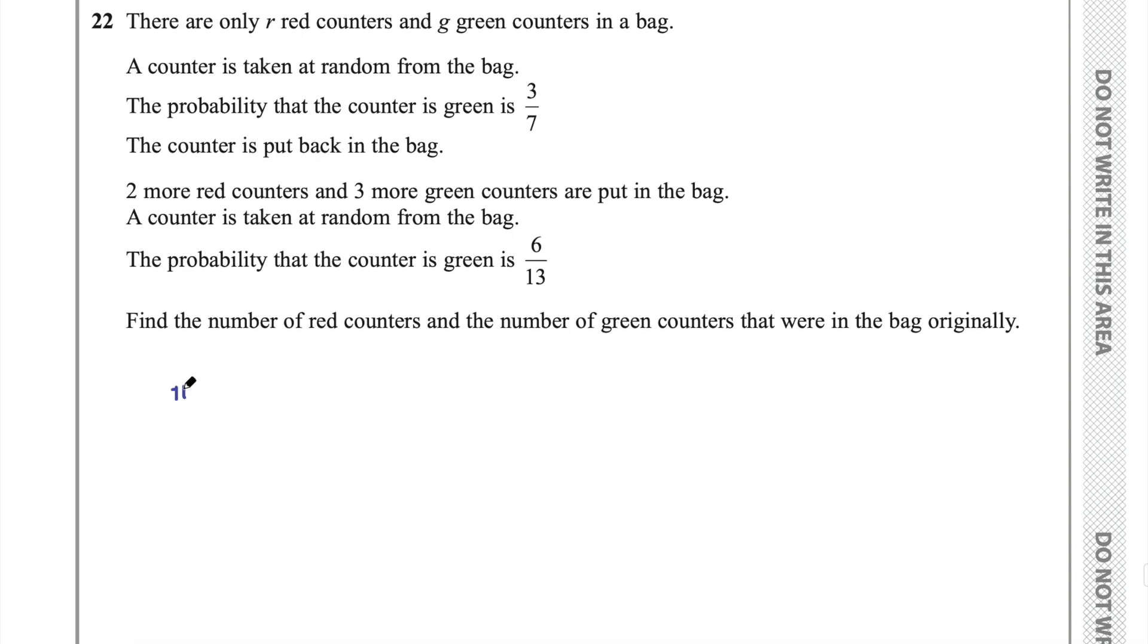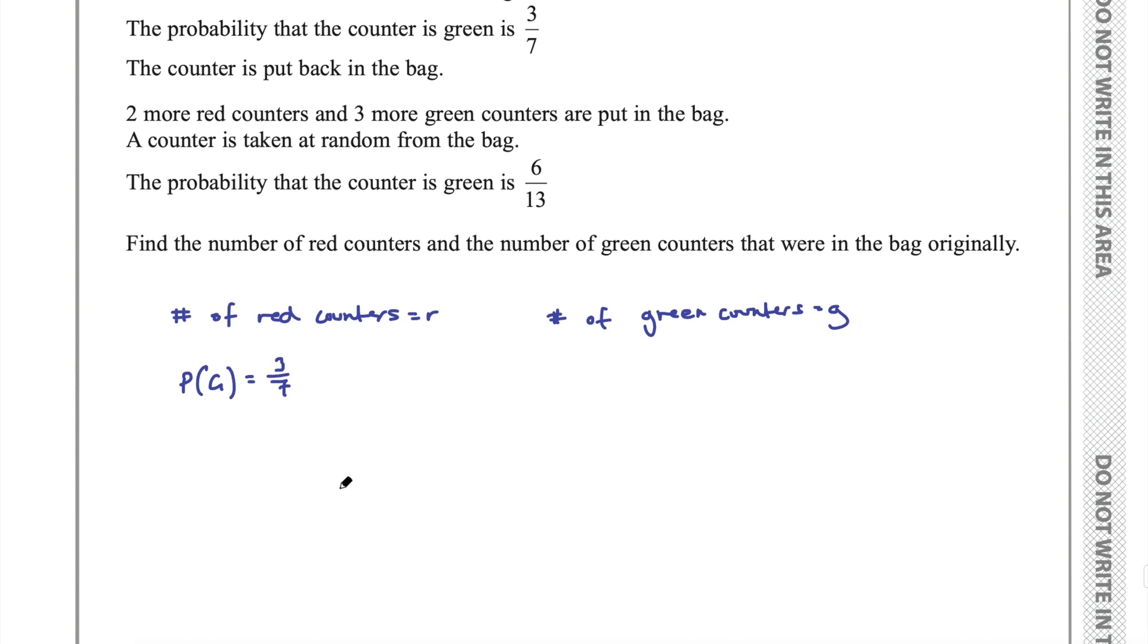The number of red counters originally in the bag equals R and the number of green counters originally in the bag is G. They tell us the probability of picking a green counter is 3 over 7. How do I create an equation out of that? How do I relate these unknowns, R and G, to this value they've given me? You need to relate these unknowns to that value somehow.